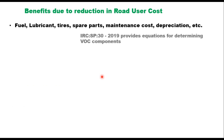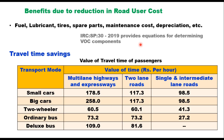The vehicle operating cost components are fuel, lubricant, tires, spare parts, maintenance cost, depreciation, etc., and IRC SP 30 provides equations for determining these VOC components for each category of vehicle. The travel time saving covering various types of road users is also given in this special publication. The value of travel time for small car, big car, two-wheeler, ordinary buses, and deluxe buses for different types of highways are given for different categories of vehicles in this publication.